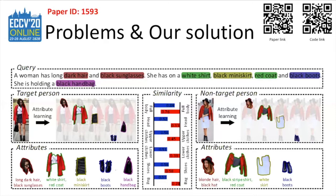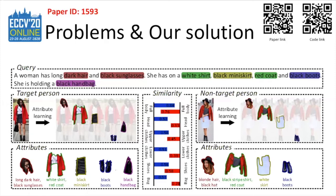We seek insight from a fatally flawed case that lingers in most current vision-language systems as illustrated. Both images present high similarities with the input query, because the salient fragments in language descriptions such as black, white, red, shirt, skirt, and boot appear in both images but with different permutations. For instance, the lady on the left is in a white shirt and black skirt, while the lady on the right is in a black shirt and white skirt. In this case, it is hard to identify the target person when measuring similarities across modalities in a holistic fashion.